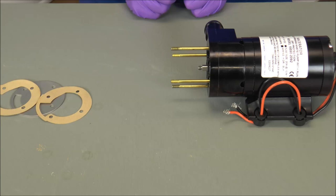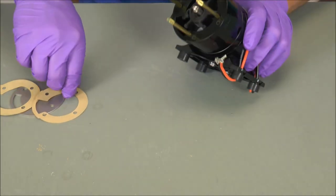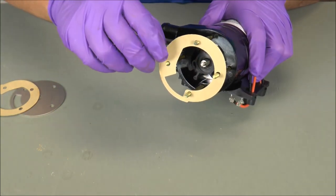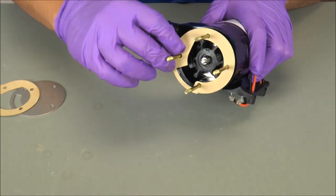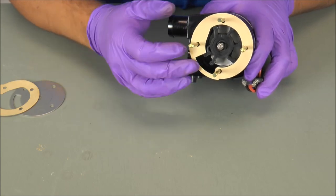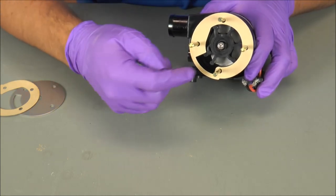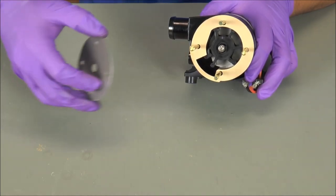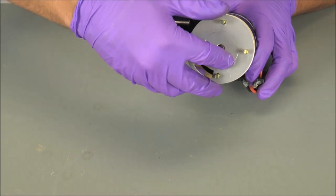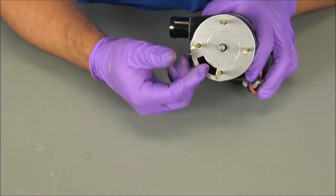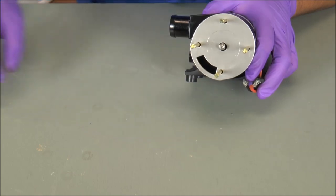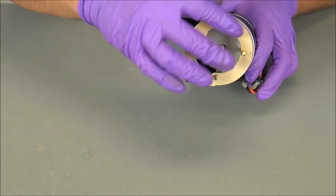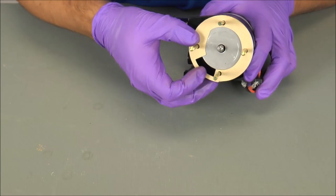So now we're going to reinstall the two paper gaskets and the large wear plate. First things first, paper gasket goes on first, and you want to make sure that the cut out of the paper gasket matches the cut out of the impeller housing. After the first paper gasket comes the large wear plate. Again, that opening matches the same opening of the impeller housing, and then last comes the second paper gasket, keeping in mind that the cut out matches the same cut out of the impeller housing.